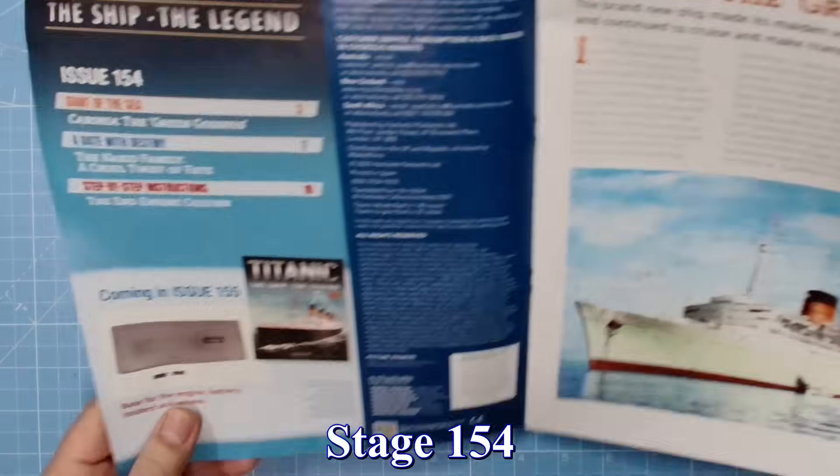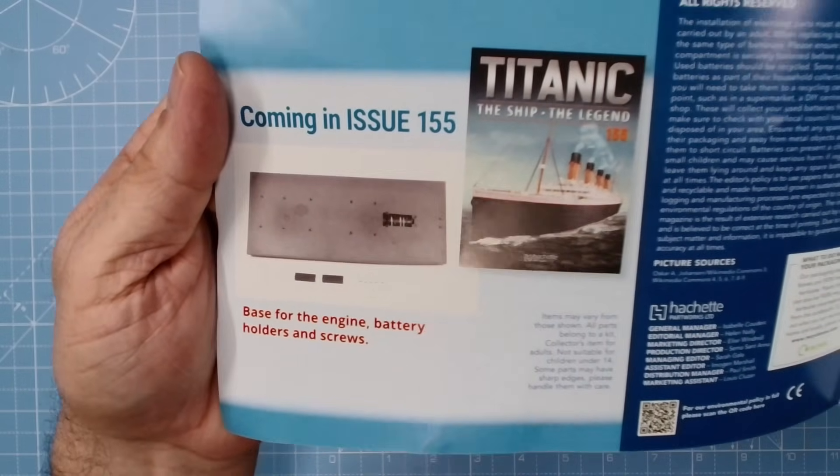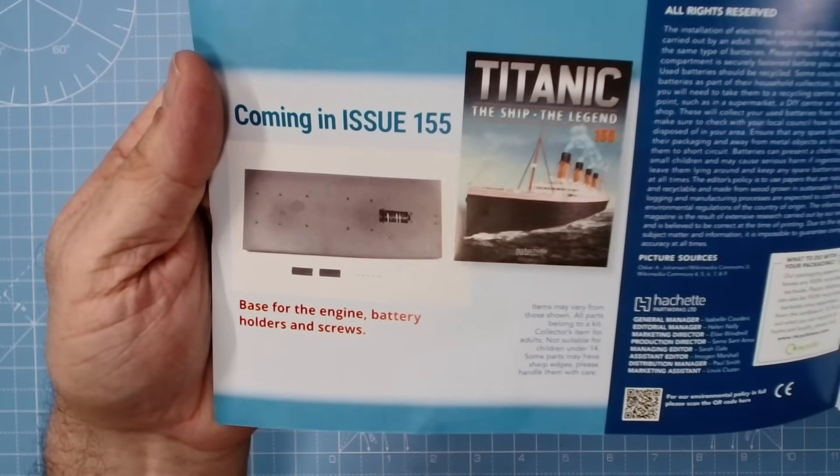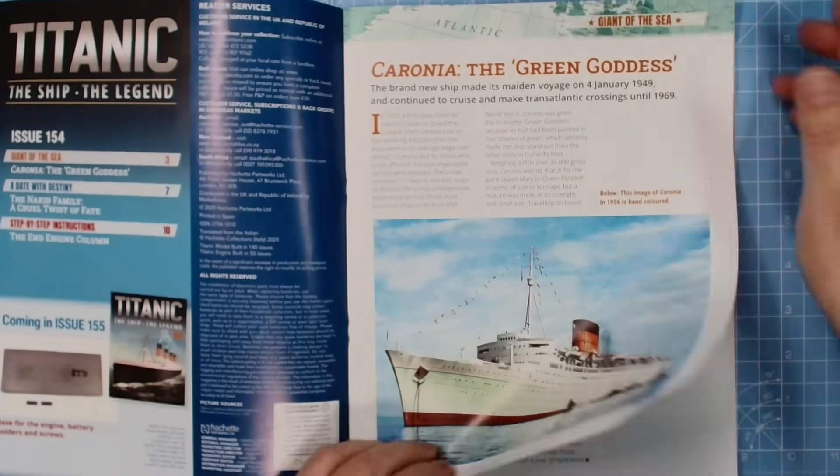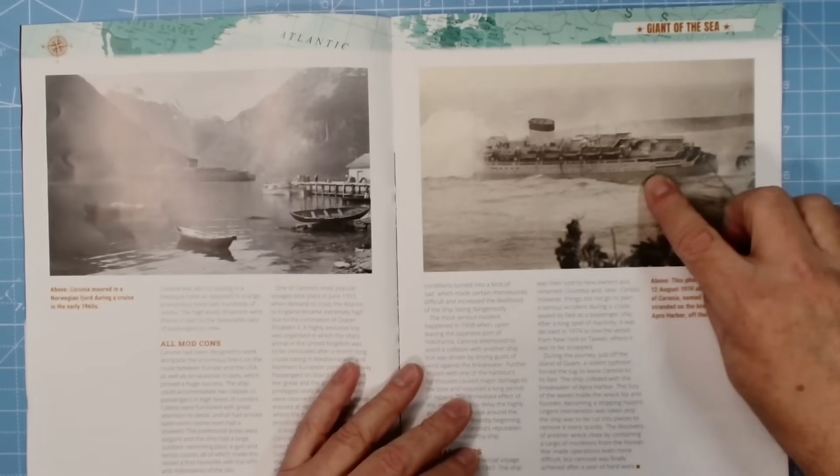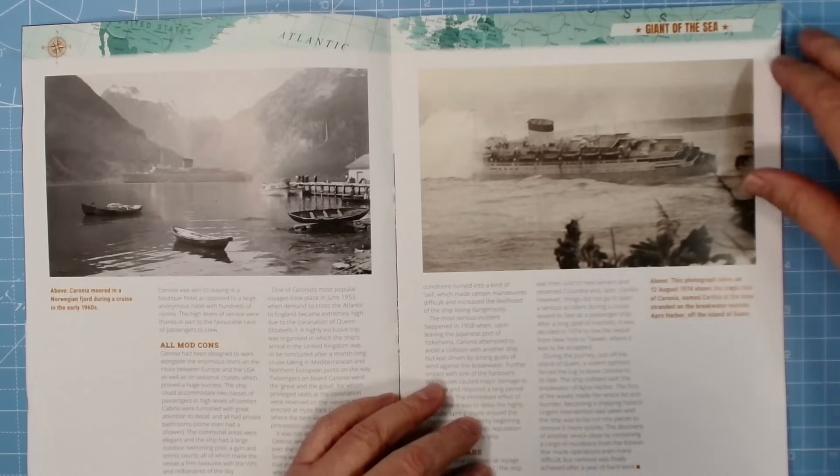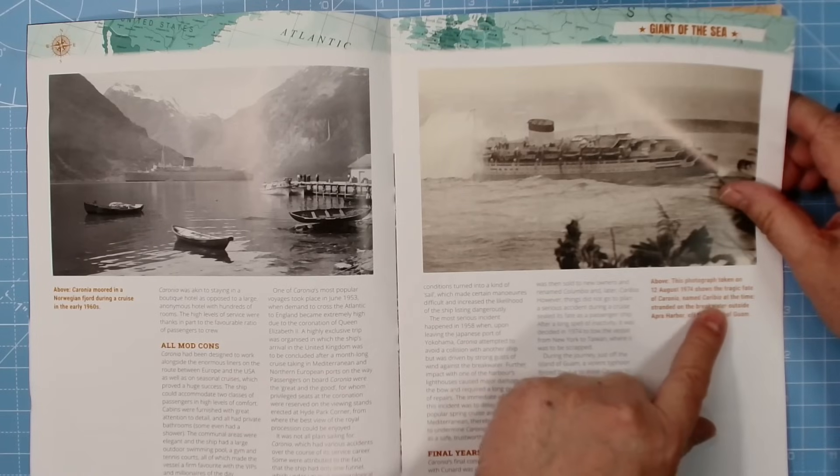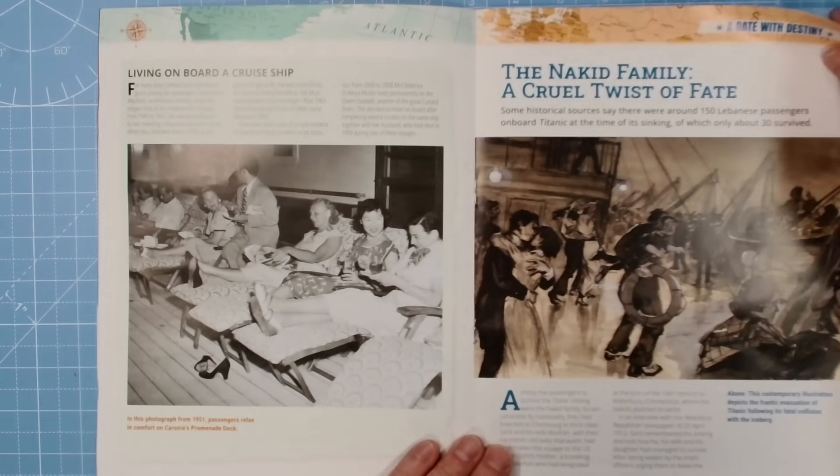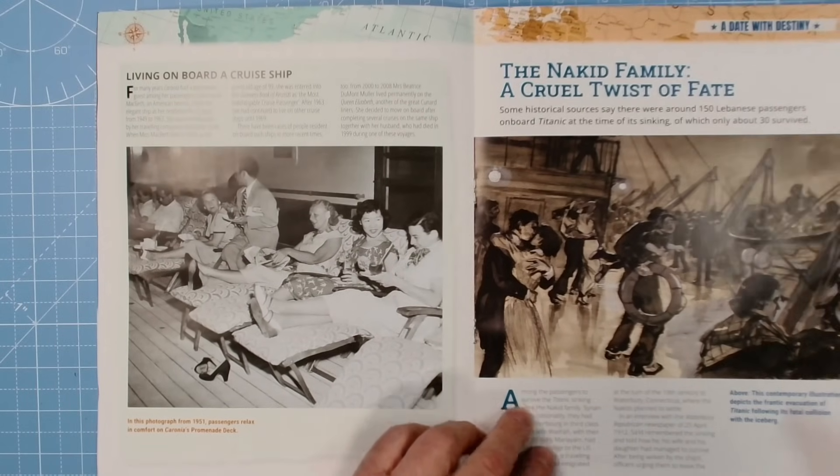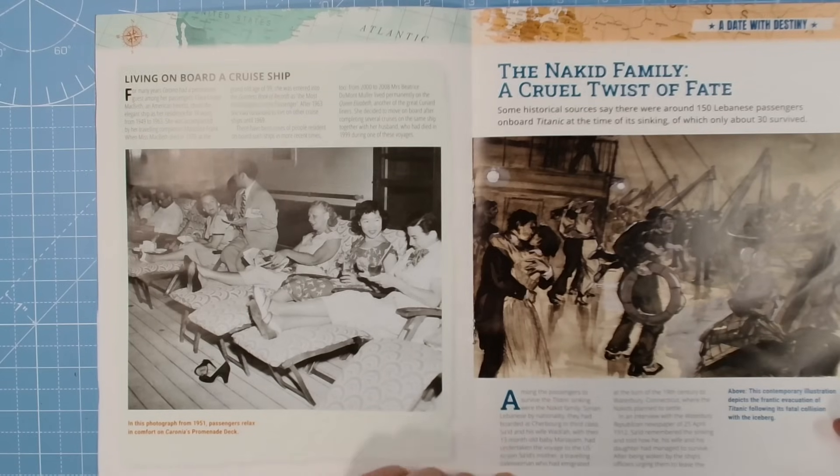Okay, now stage 154 coming in issue 155, base for the engine, battery holders and screws. In the magazine we have Caronia, the Green Goddess, and there she is. 20 years service, and this is what happens to her. In 1974 she was renamed the Caribiner.